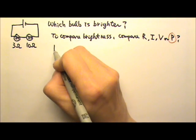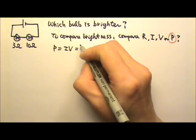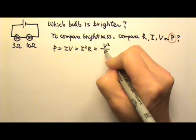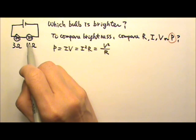So let's compare the power. Power is IV equals to I squared R and it's also V squared over R. Now because the two bulbs are in series, that means they get the same current.